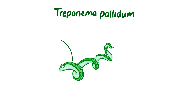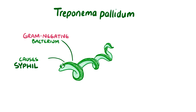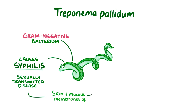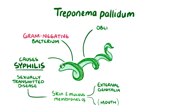Treponema pallidum can be considered a gram-negative bacterium, even though its cell envelope differs from other gram-negative bacteria. You might know T. pallidum because it causes syphilis, a sexually transmitted disease that affects the skin and mucous membranes of the external genitalia, and also sometimes the mouth. Treponema pallidum is an obligate parasite bacteria, meaning it can't survive outside a living human being's body.